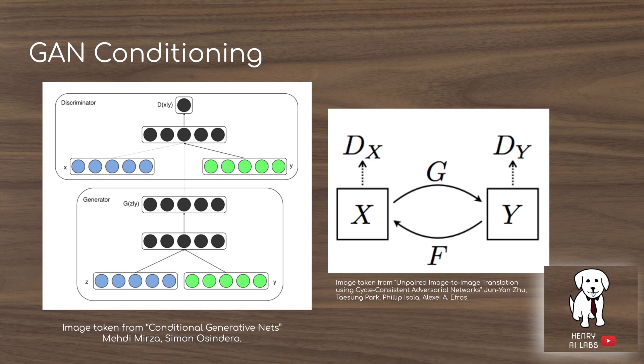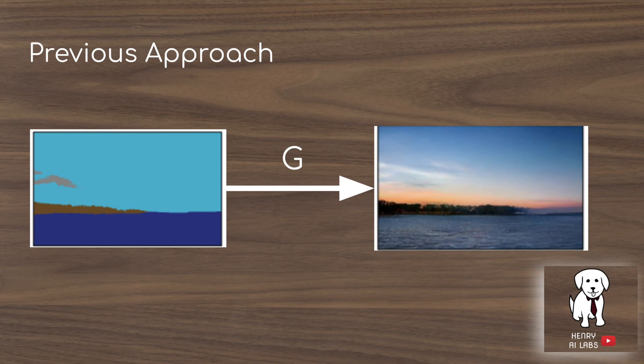You would condition the model by first giving the GAN the original image to translate from. So rather than starting from a random vector, in image-to-image translation the generator starts from the original image. The previous approach would be to take this pixel map as input and use a generator with a series of convolutional layers to arrive at the photorealistic image.